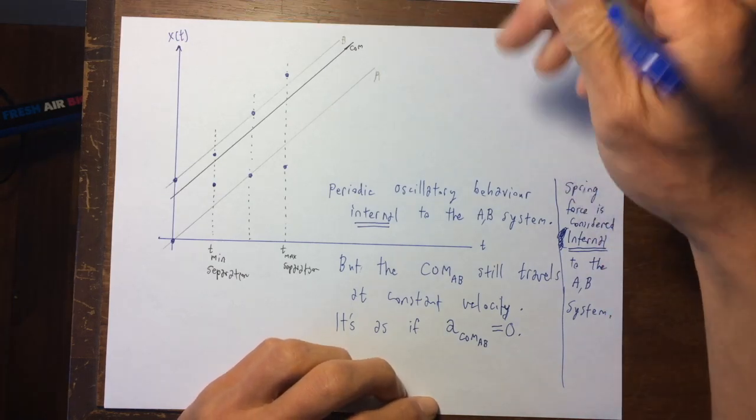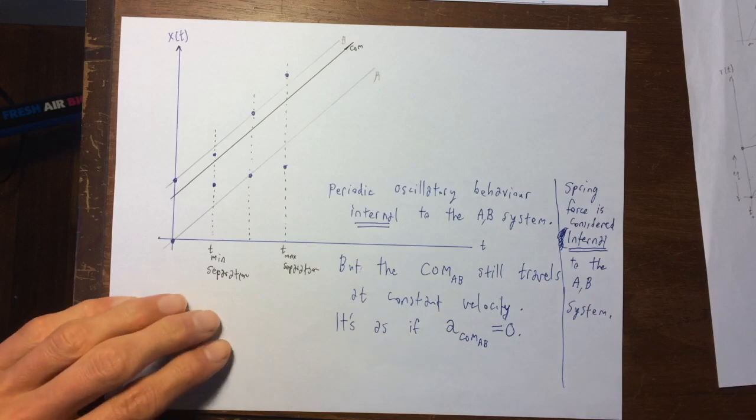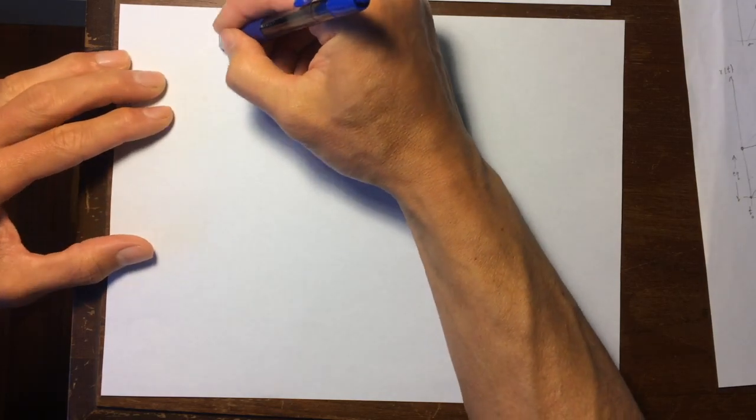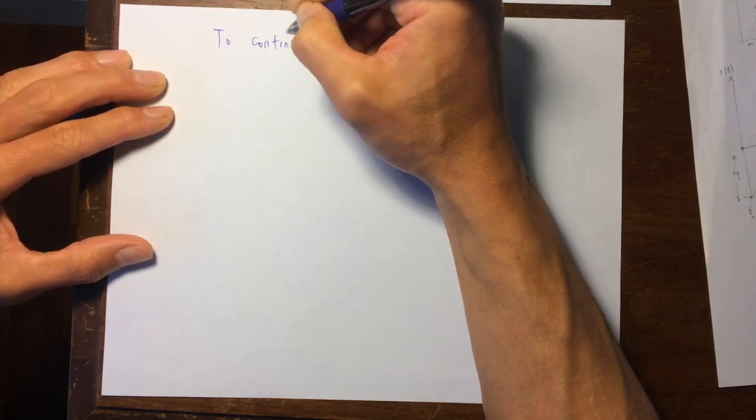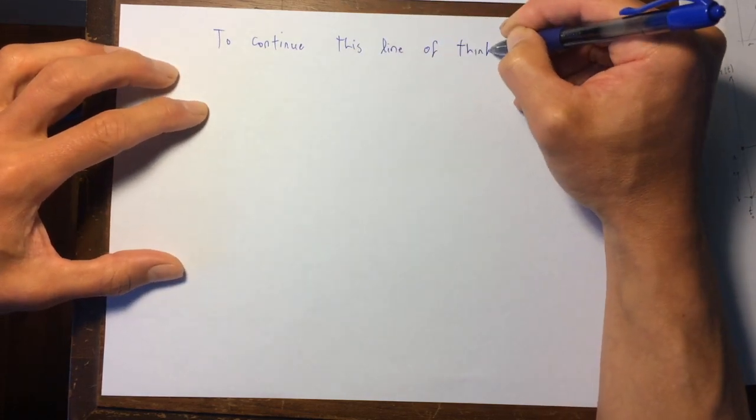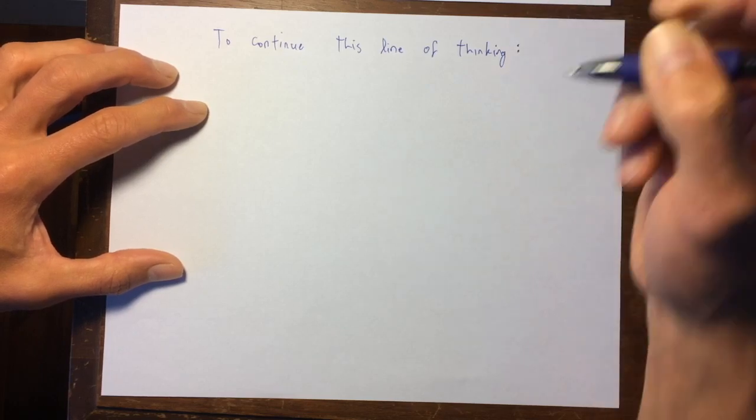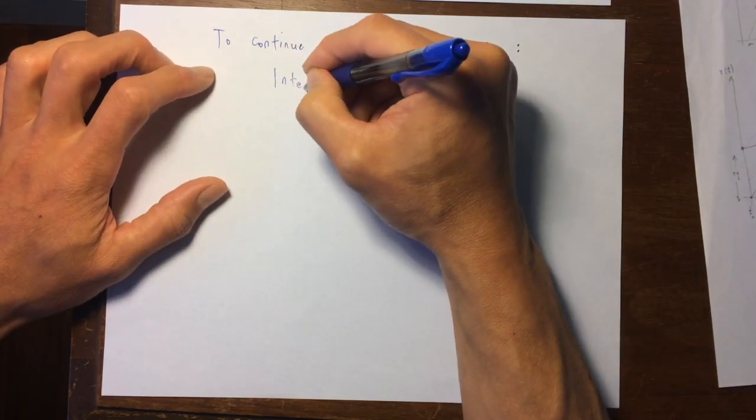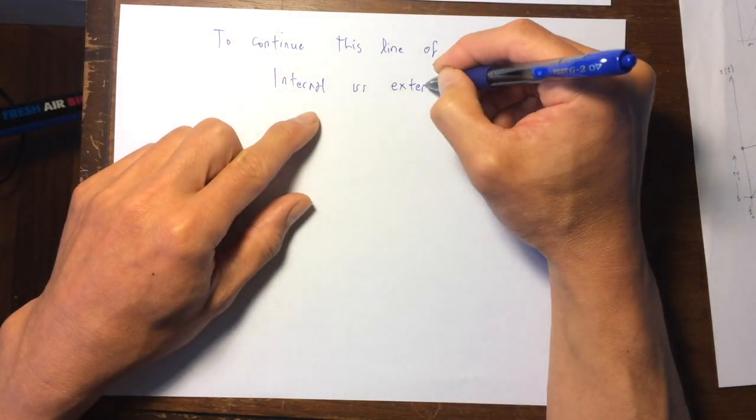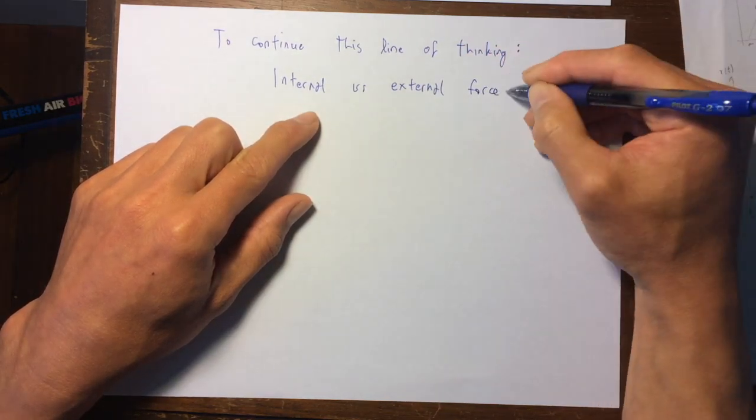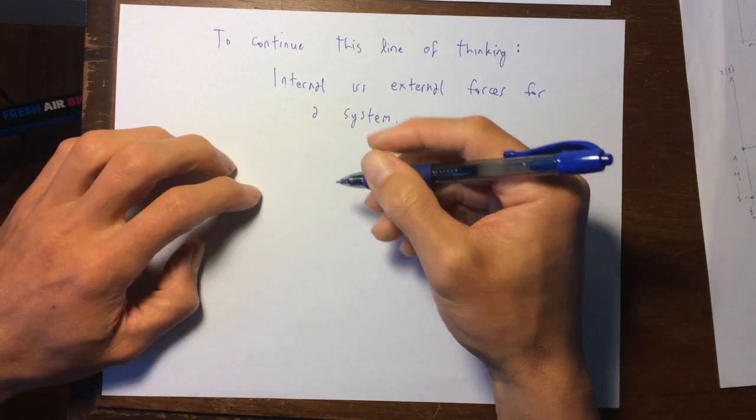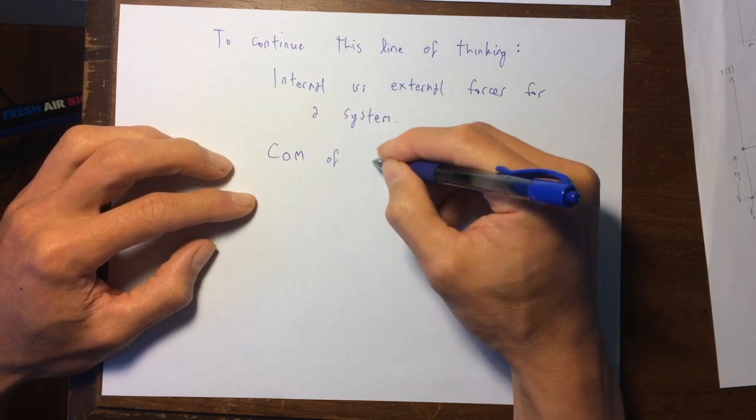So what we have to do is continue and talk about, the continuation of this sort of line of thinking. So to continue, we have to talk about what's meant by internal versus external forces for a system, and we have to talk about the center of mass of a system.